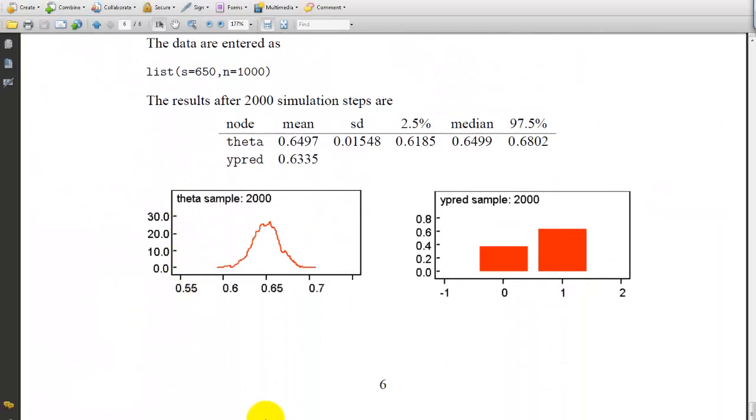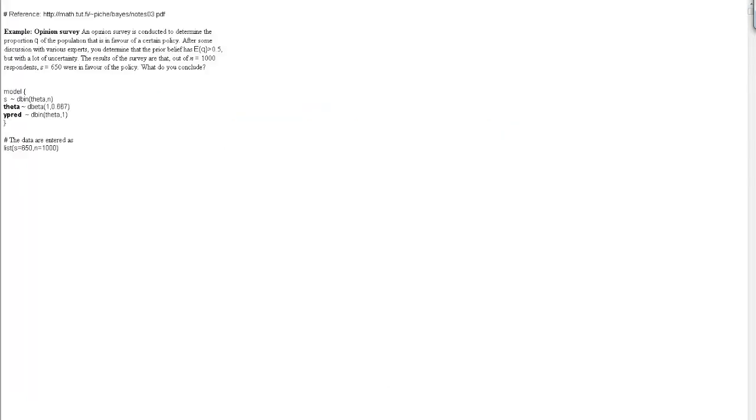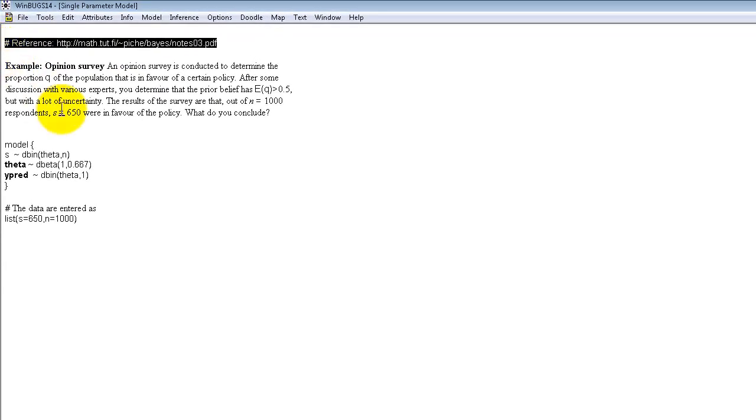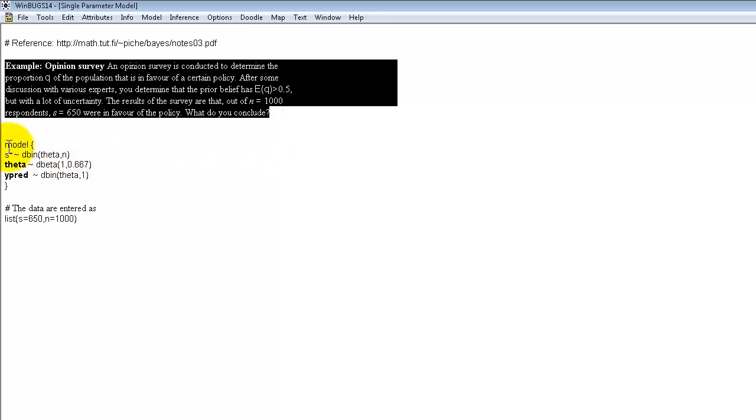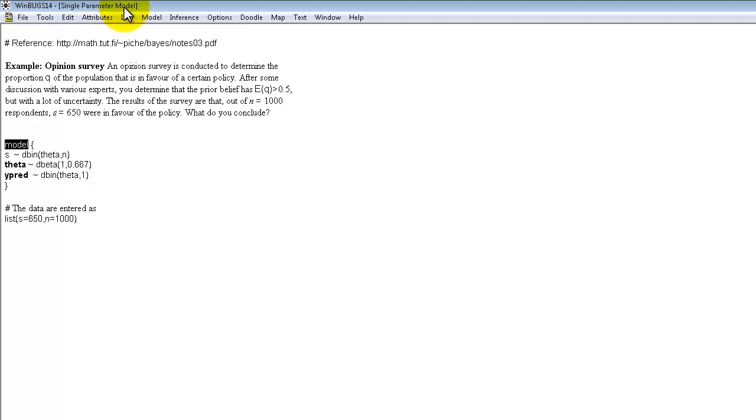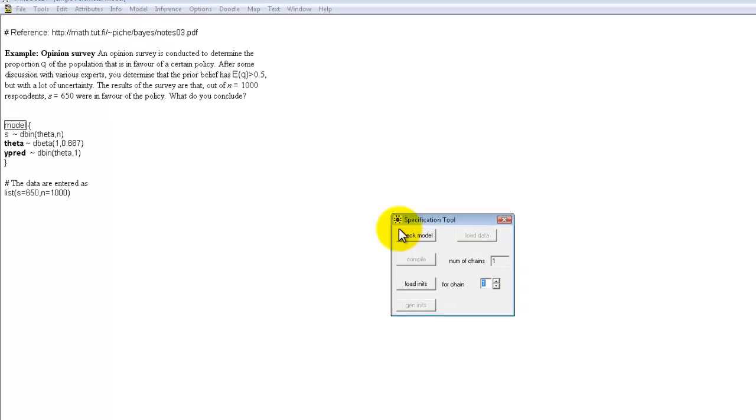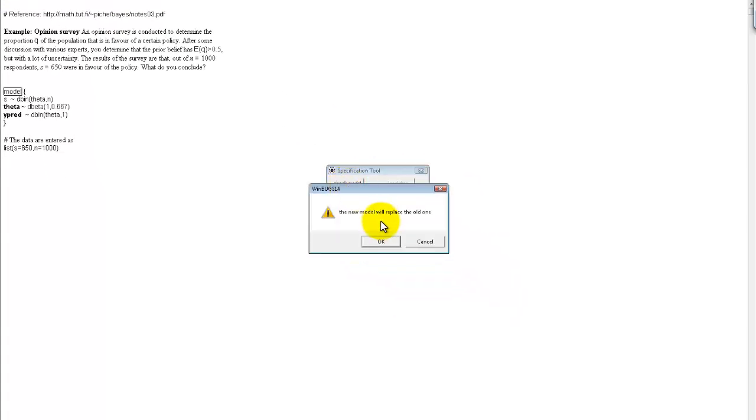Alright, so I just go to WinBUGS. This is the reference right here. This is where I got this from. This is the question again. And what we're going to do is run the WinBUGS. So we're going to specify the model. Check the model. Okay, the model is syntactically correct.